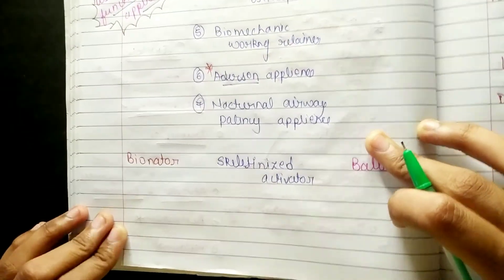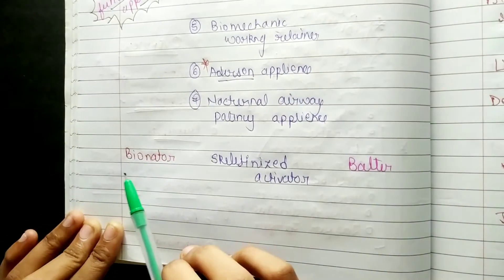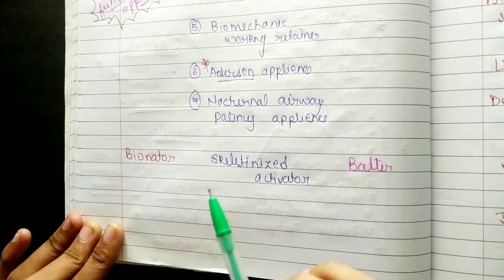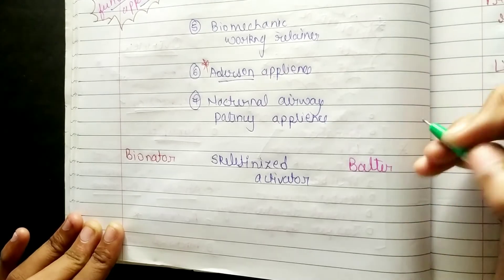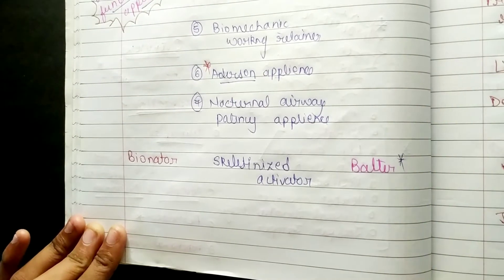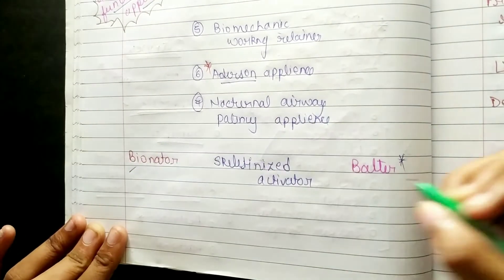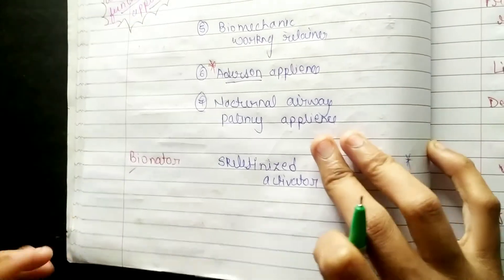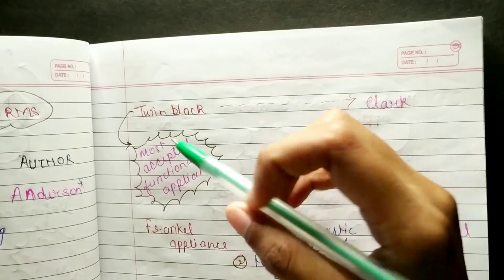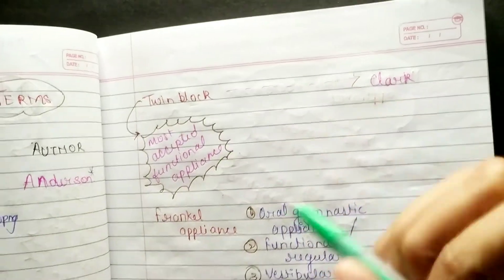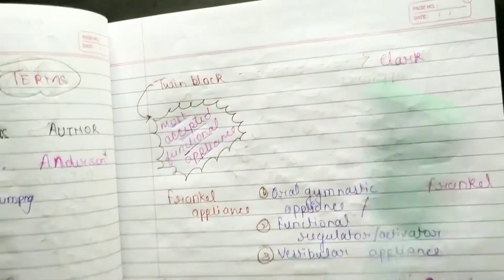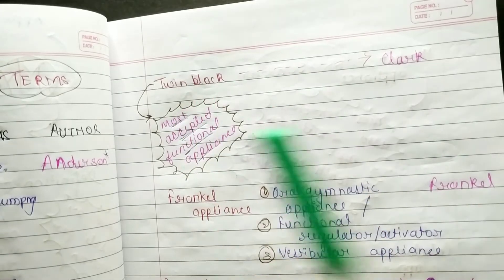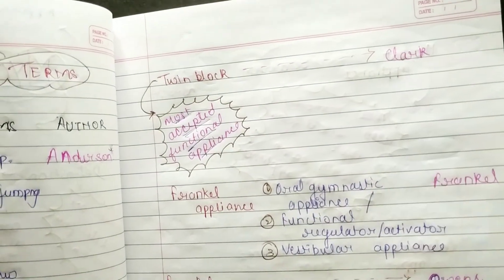The second appliance is the Bionator, which is called the Skeletonized Activator. Balter discovered it — remember: B for Bionator, B for Balter. The Twin Block is the most accepted functional appliance, and it was discovered by Clark.